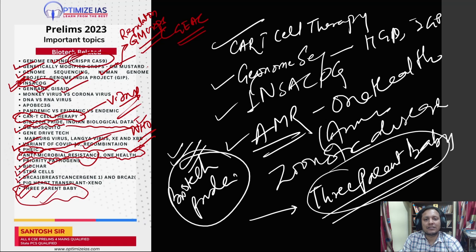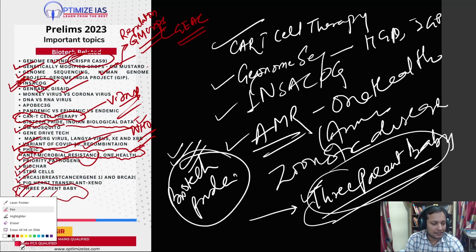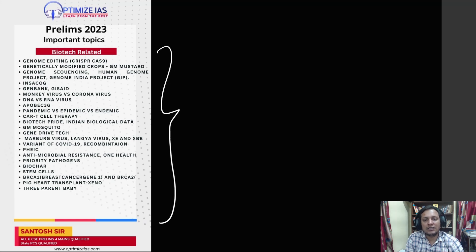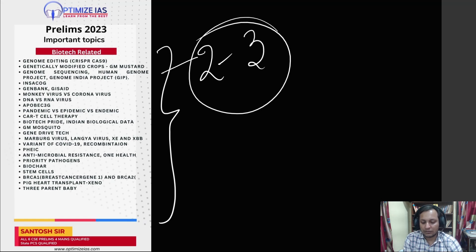I hope UPSC must have already framed a question on this. It might not come in prelims 2023 but is very important for mains 2023 and prelims 2024. Please go through this list — it is very important. Most questions in the biotechnology section — generally two to three questions will definitely come from biotechnology — and these questions will not be outside the ten topics I have given. Questions will be coming from these ten topics only.